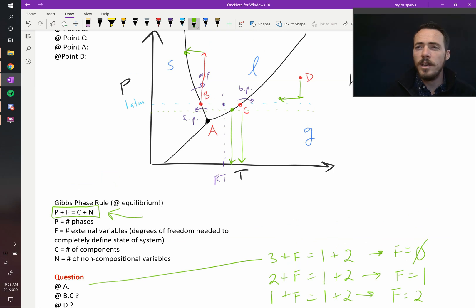So that's how I use Gibbs phase rule in a unary phase diagram. We'll do some more complicated examples when we get to more complicated diagrams in a minute.